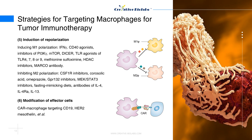6. Modification of effector cells: Chimeric antigen receptor macrophages, similar to CAR-T cells, have been used to enhance tumoricidal functions. Targets such as CD19, HER2, and mesothelin have been explored.